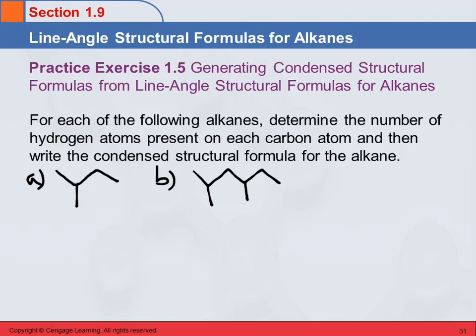They are asking us to determine the number of hydrogens on each carbon and then write the condensed structural formula. Do we have to do it in that order? Not necessarily. You might find it easier to write the condensed structural formula first. So let's do that for A.